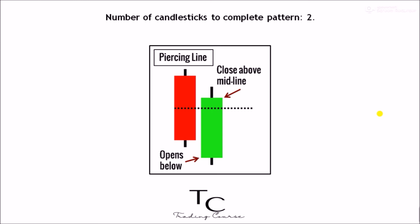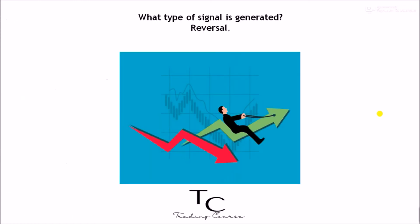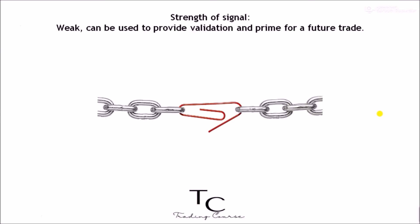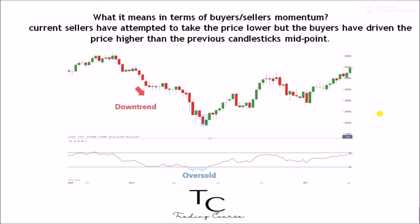Number of candlesticks to complete the pattern: 2. Type of signal generated: reversal. Strength of signal: weak — can be used to provide validation and prime for a future trade. In terms of buyers and sellers momentum, the current sellers have attempted to take the price lower, but the buyers have driven the price higher than the previous candlestick's point.